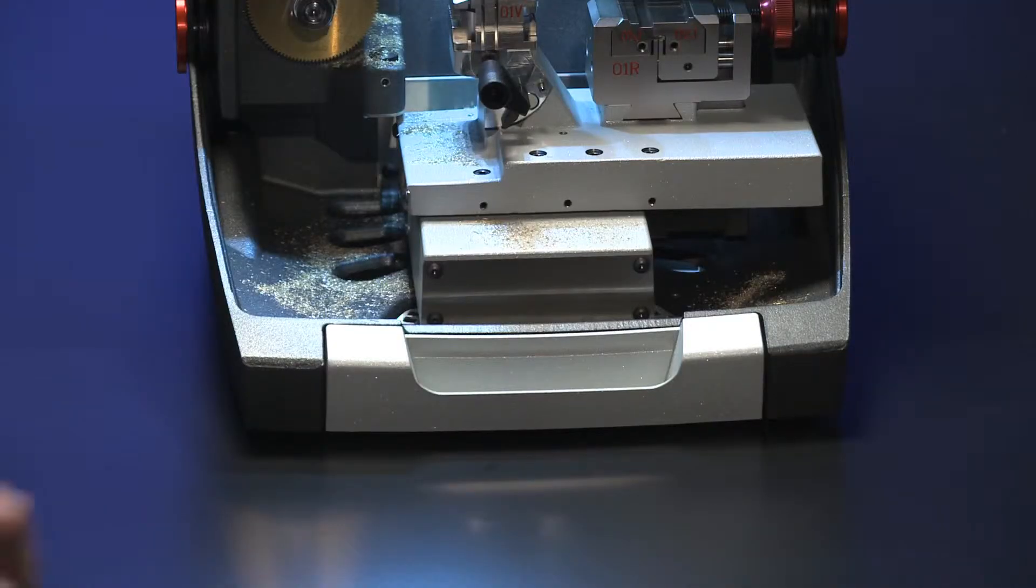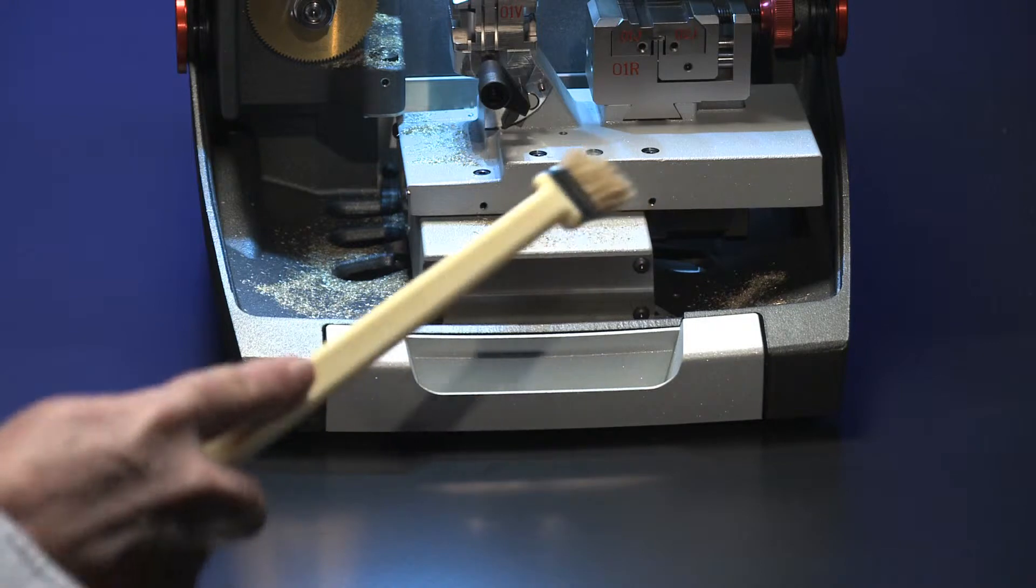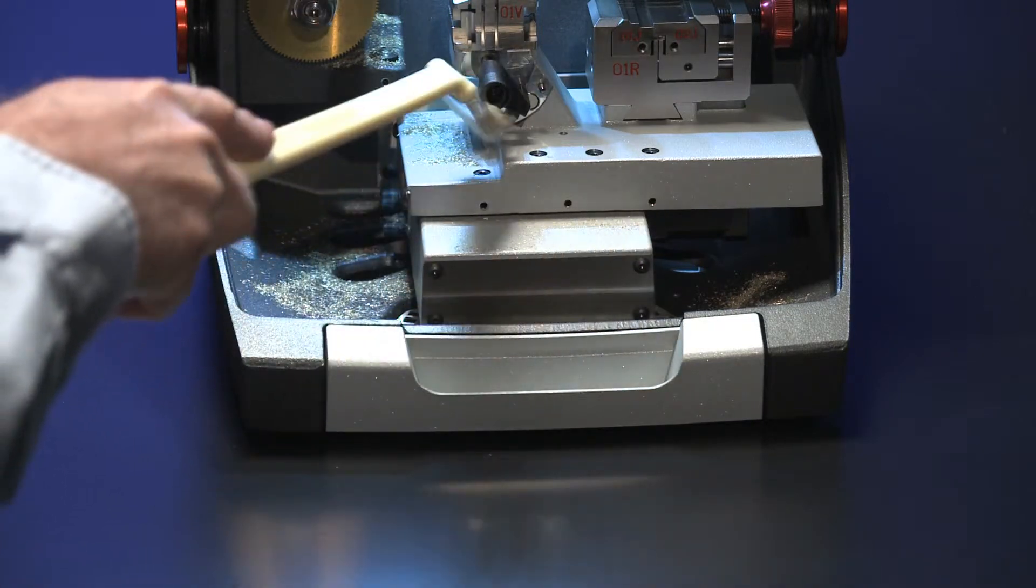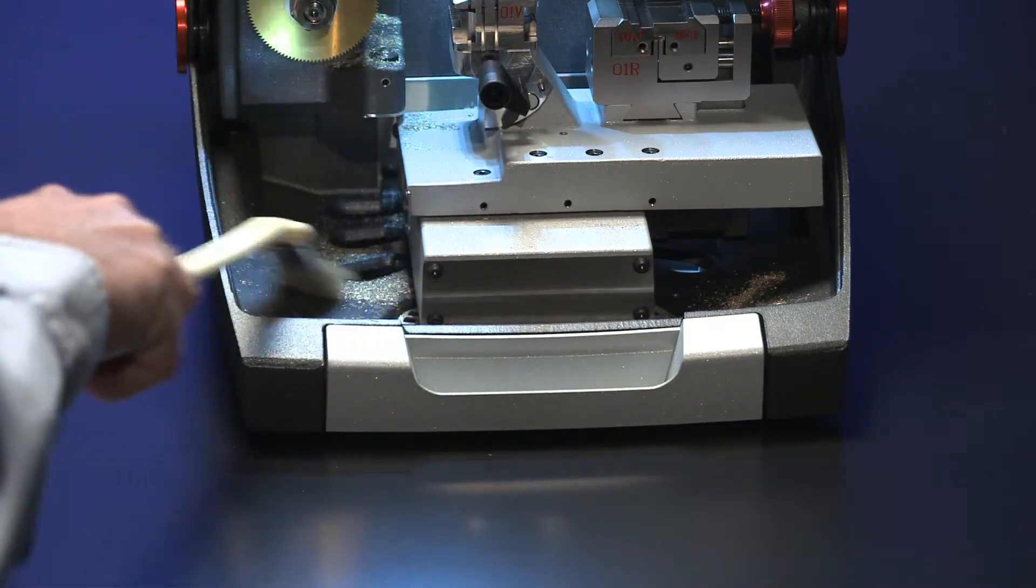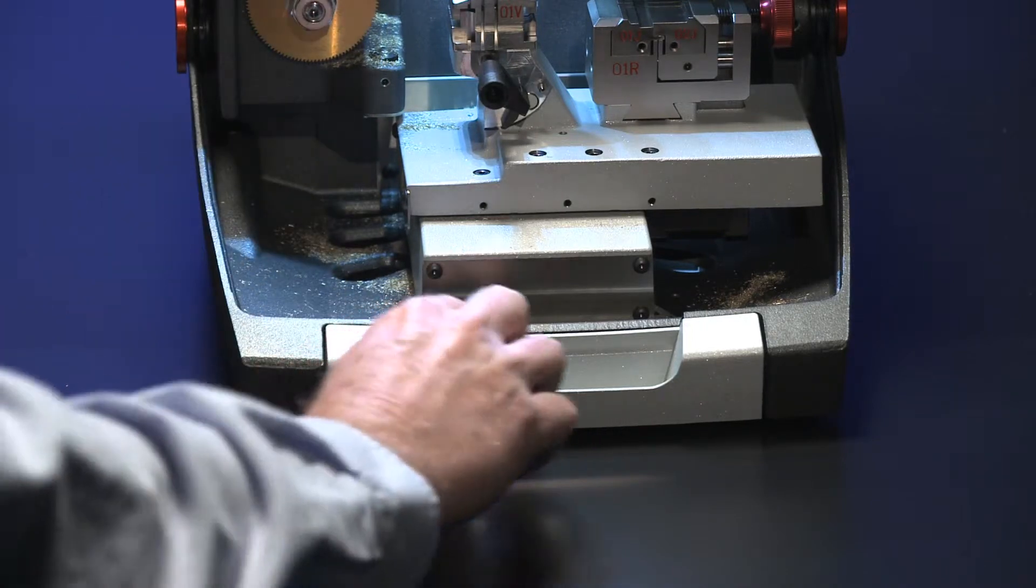A collection tray is located at the bottom of Futura. Use the brush to sweep or brush shavings into the slots under the work area. Then remove the tray for easy disposal of the shavings.